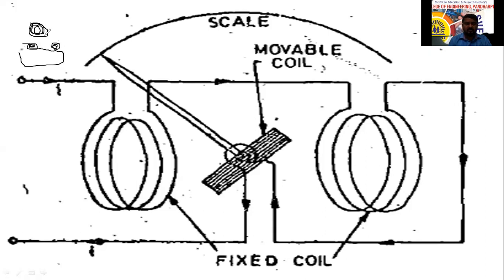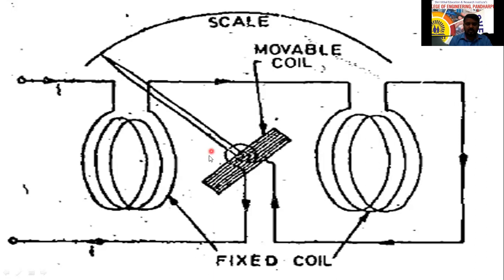The main parts of the dynamometer are two coils: one fixed coil and one moving coil. The fixed coil is split into two equal parts. Both halves are placed at some distance from each other because the mutual inductance — the flux — must be produced between them.